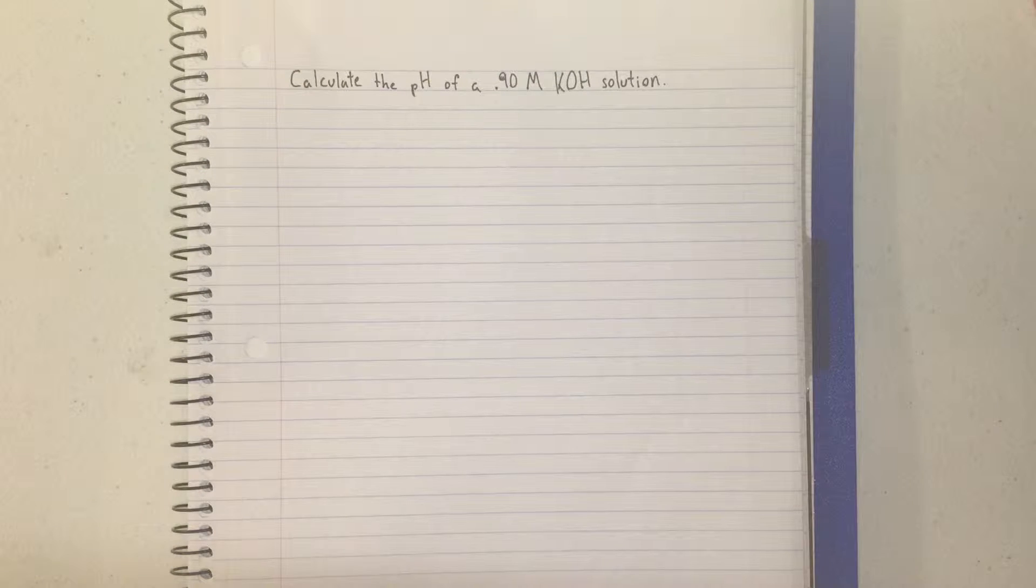Calculate the pH of a 0.90 molarity KOH solution. KOH is an ionic compound and completely dissociates into ions.